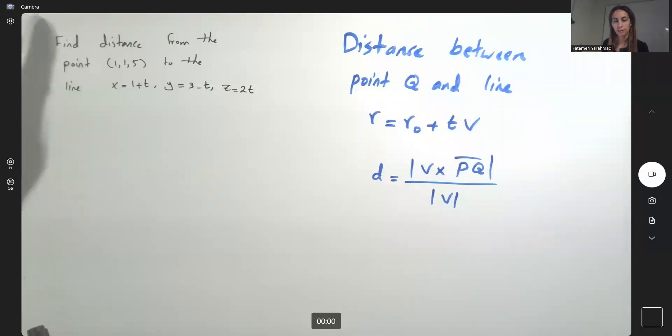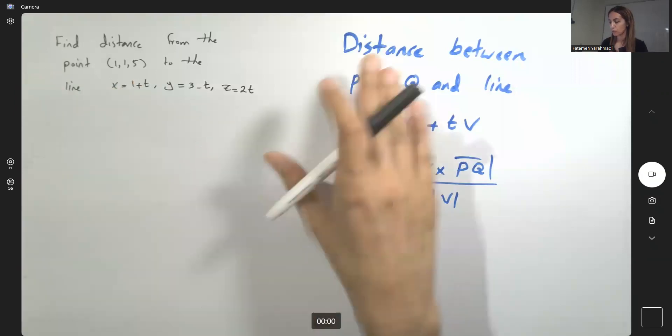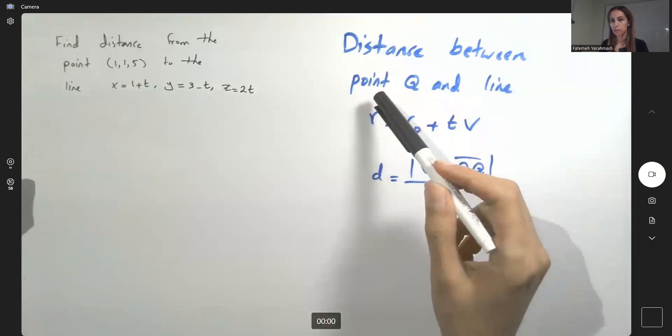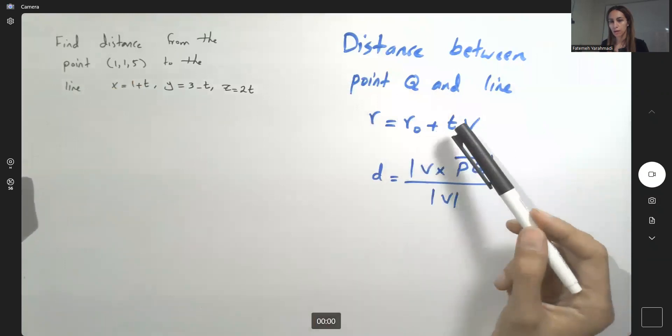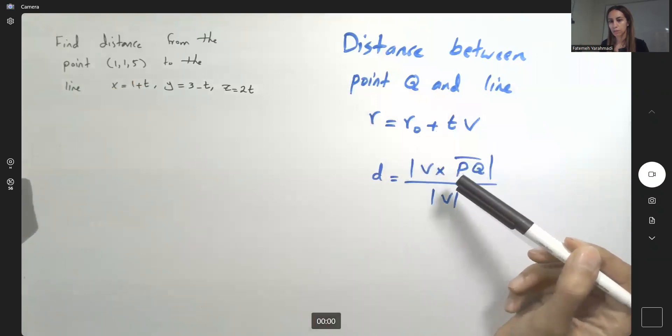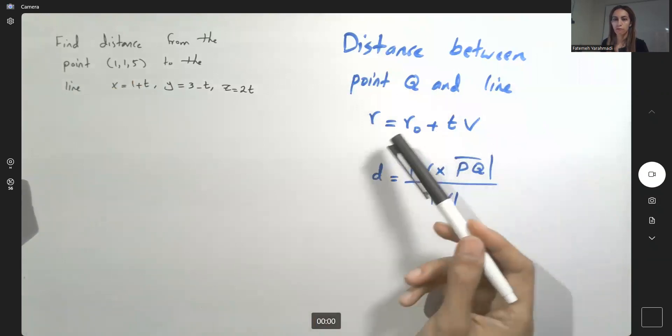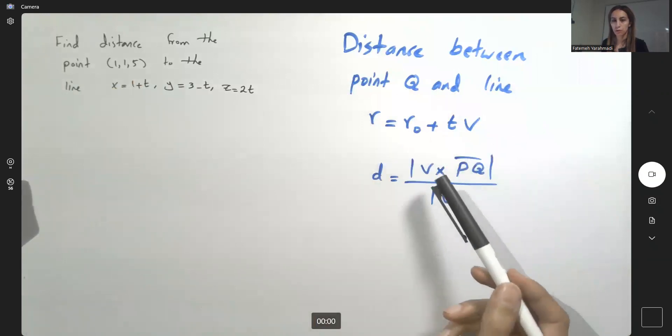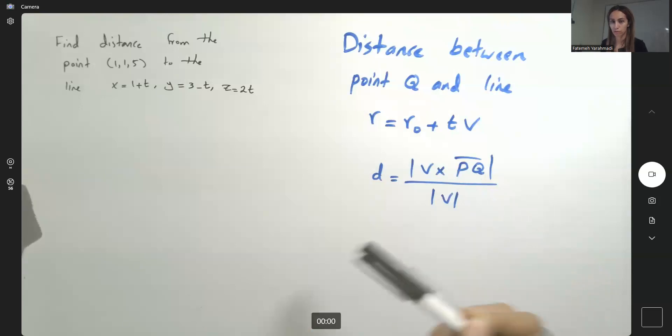This question says find the distance from 0, 1, 1, 5 to the line which is defined in parametric form this way. The distance formula between a point which is not on the line and a line given to you in parametric form with P as a point on the line follows the formula. So we need to find the magnitude of the cross product between V, the direction vector, and PQ divided by the magnitude of V.